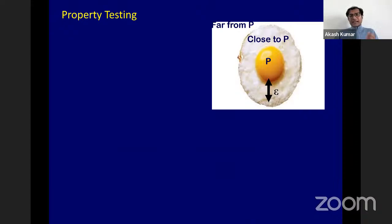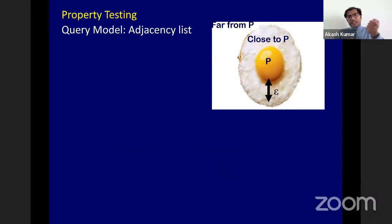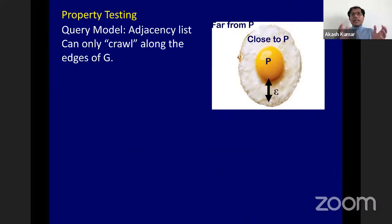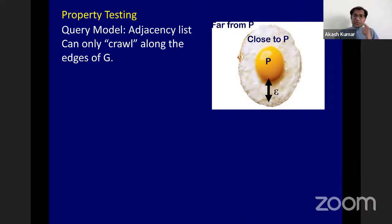The graph is given to you as a bounded-degree graph with access to its adjacency list. You can ask for a random vertex i, and you can ask for the j-th neighbor of vertex i. These queries allow you to explore the graph locally by crawling along its edges — you can perform breadth-first searches, depth-first searches from randomly chosen vertices, or perform random walks.